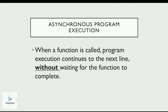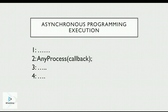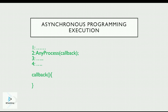To avoid this, we have the asynchronous programming model, where when a function is called, program execution continues to the next line without waiting for the function to complete. So if I have something that takes time, my program will not wait for it — it will move to the next line, and when that function completes, it will come back to it. In this model, the function on the second line has a callback, so execution moves to the third and fourth lines, and once that function completes, it goes to that callback.